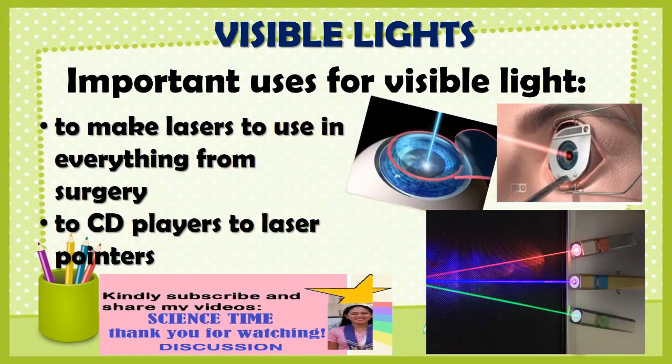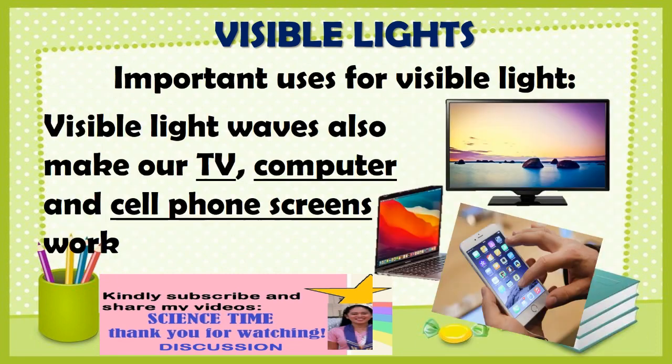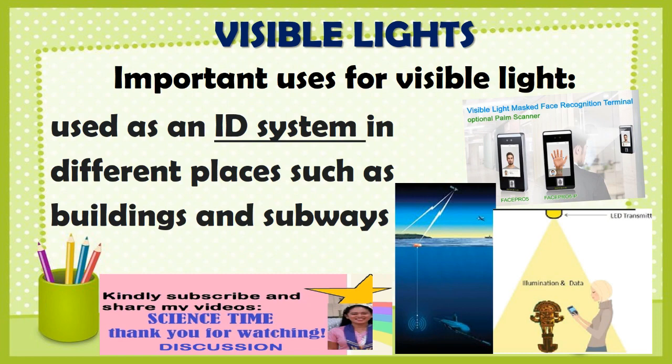Aside from sight, there are other important uses for visible light. We concentrate visible light to make lasers, used in everything from surgery to CD players to laser pointers. Visible light waves also make our TV, computer, and cell phone screens work. Visible light can also be used as an ID system in different places such as buildings and subways.